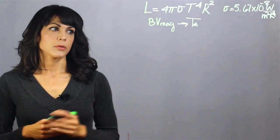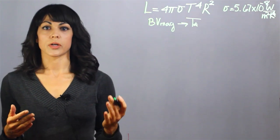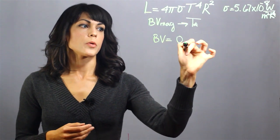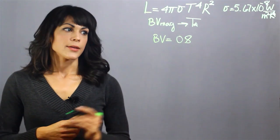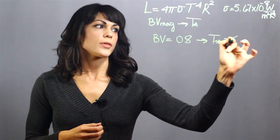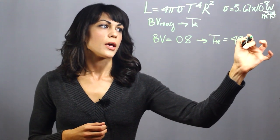Now let's look at an example. Let's say we are observing the star Capella. And the star Capella has a BV magnitude of 0.8. This leads us to a temperature of 4940 kelvin.